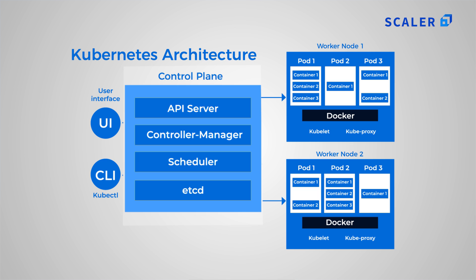Control plane and API server: every time you want to interact with the Kubernetes cluster, you would have to go through the API server. All operations against pods are executed through the API server. A controller manager is a sort of a big overseeing manager that manages a bunch of processes. The controller manager is responsible for ensuring that the shared state of the cluster is working as expected.